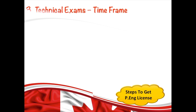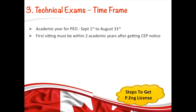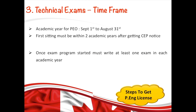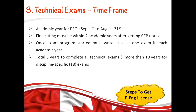There is a time frame for writing your technical exams. The PEO academic year runs from September 1st to August 31st. You must write your first exam within two academic years of receiving your letter from PEO, and once you start the exam program, you must write at least one exam per academic year. You have eight years total to complete your four assigned technical exams, or ten years if assigned 18 exams.